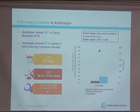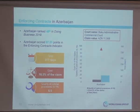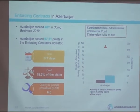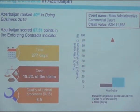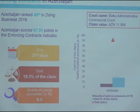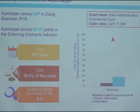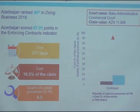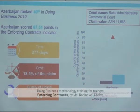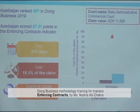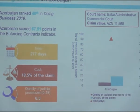For Azerbaijan's results on enforcing contracts, Azerbaijan ranks 40 out of 190 countries in Doing Business 2019, with a score of 67.51 on this indicator. It takes about 277 days to resolve a commercial dispute through court, costing 18.5% of the claim value. Azerbaijan scores 6.5 out of 18 points on the quality of judicial processes. The court examined is the Baku Administrative Commercial Court, and the claim value is 11,568 manat.